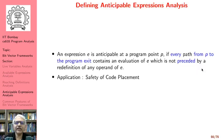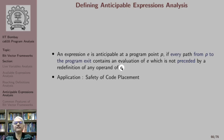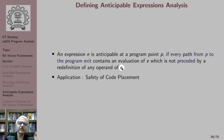So what is an anticipable expression? An expression e is considered to be anticipable at a program point p if every path from p to program exit contains an evaluation of e which is not preceded by a redefinition of any of the operands of e. Note that this is just a dual of available expressions analysis. In available expressions analysis we talked about every path from start to p, whereas here we are talking about every path from p to program exit.